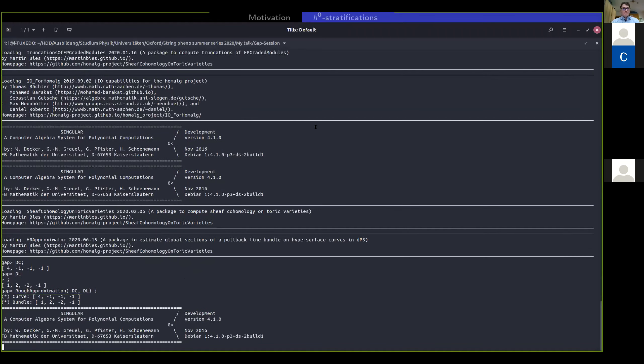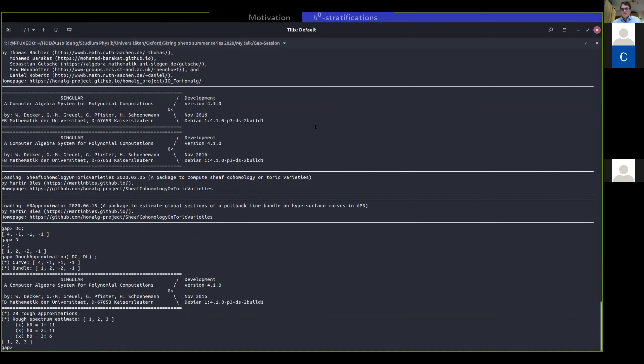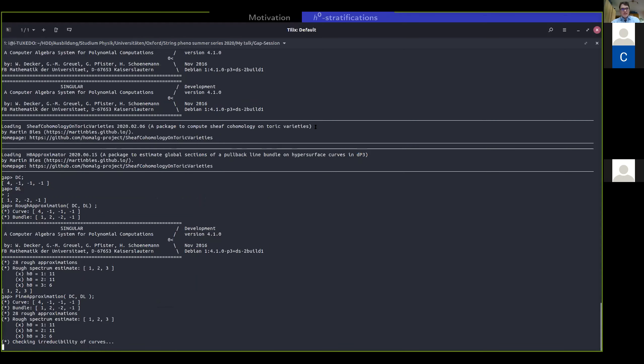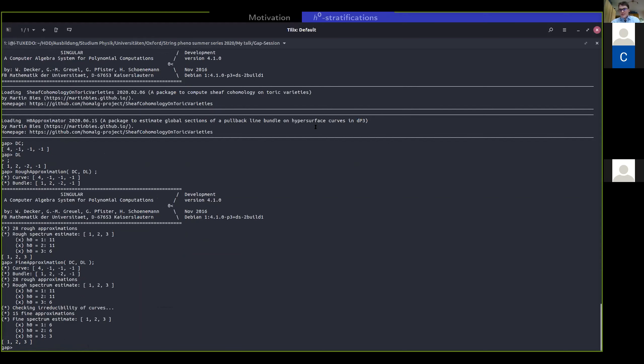And here's the outcome. So it considers 28 setups, predicts that we can have H^0 ranging from 1, 2, and up to 3. This does not include the irreducibility demand. So let us try a bit finer by doing a fine approximation instead. And as you see, that takes a little moment of time because that triggers a number of primary decompositions. And as you see, it actually goes down from 28 to 15 approximate setups that it considers and tells you, okay, I can go from H^0 to up to H^0 equals 3 again.